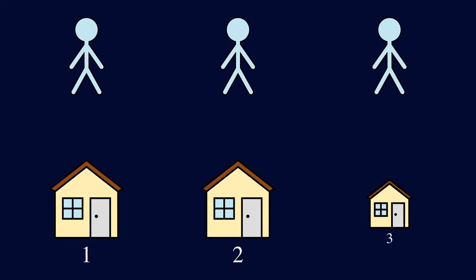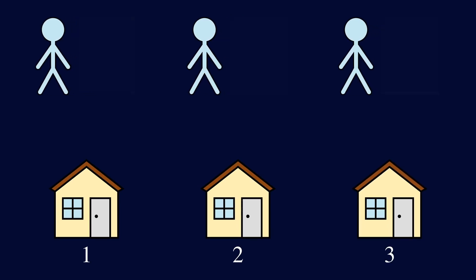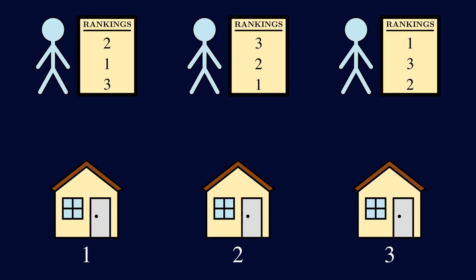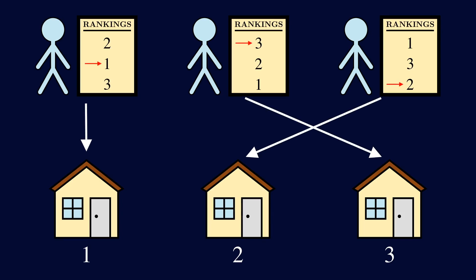Imagine you have a bunch of students that you need to assign to a bunch of dorm rooms. Each student has preferences over these dorms. For example, the first student has dorm 2 as a top choice, followed by dorm 1, and then dorm 3. Assuming each dorm has one empty room, how exactly would you assign dorms to students if you know their preferences?